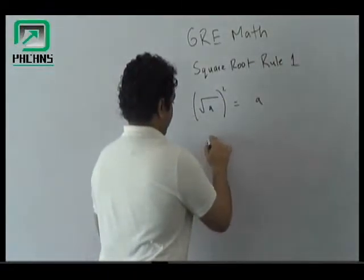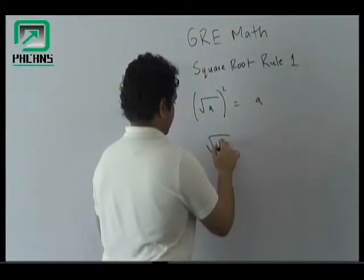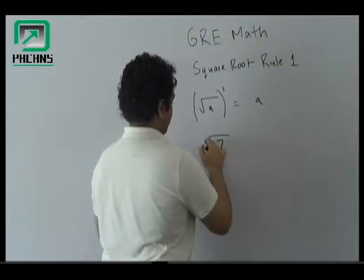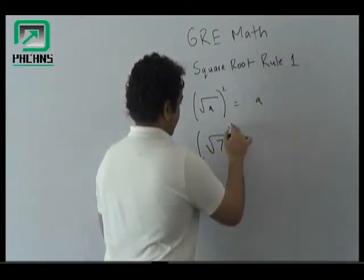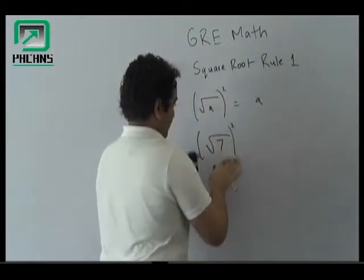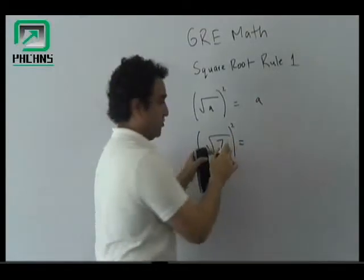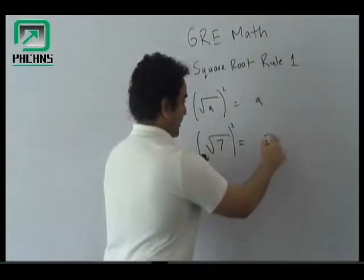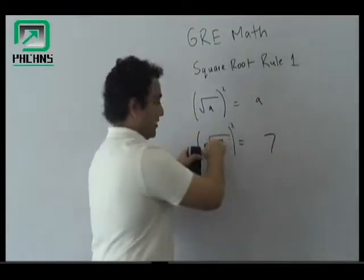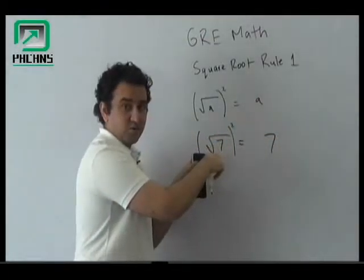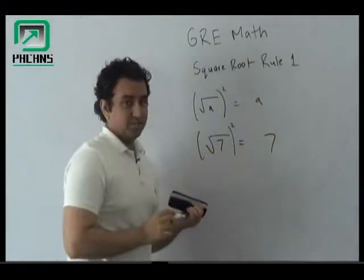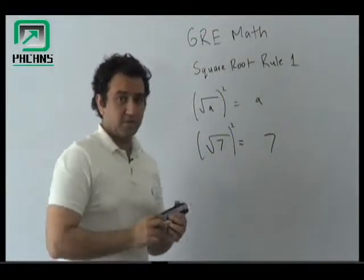If you have √(-7) and it is squared, the answer would be 7, as the square will cancel the square root and you would be left with only 7.